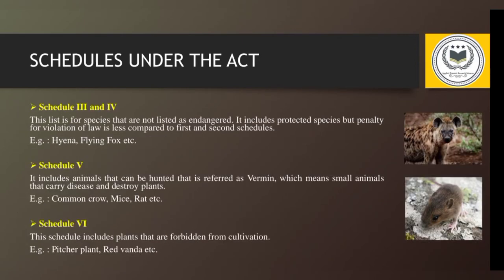Schedules Three and Four are for species not listed as endangered but still protected; penalties for violations are comparatively less. Examples include hyena and flying fox. Schedule Five includes vermin — animals or birds that can be hunted as they are considered carriers of disease — such as crows, mice, and rats. Schedule Six, the last schedule, is mainly for plants forbidden from cultivation, such as pitcher plant and Red Vanda.